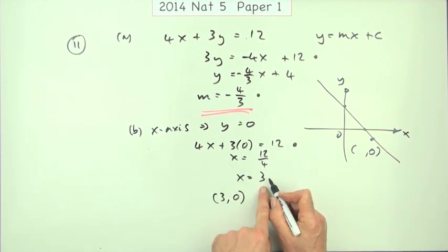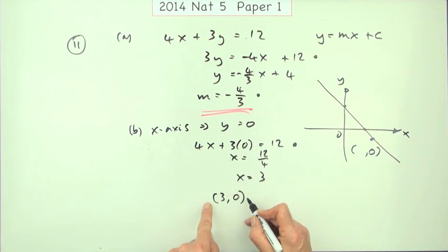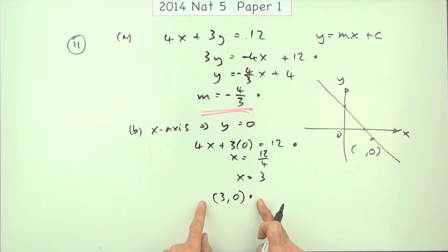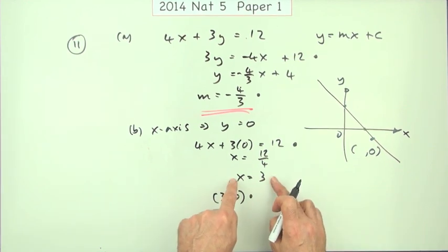But it wasn't just to find x. You actually had to write it properly like this to get the second mark. Again this one gave you those two marks just for stating (3, 0). But if you just wrote x equals 3, you'd only get one.